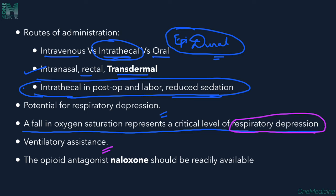Ventilatory assistance may be required in cases of severe respiratory depression. When a patient loses respiratory drive and oxygen saturation drops, definitive airway management is required — invasive ventilation is preferred. The opioid antagonist naloxone can be used if readily available as the best antidote for opioid overdose or toxicity.